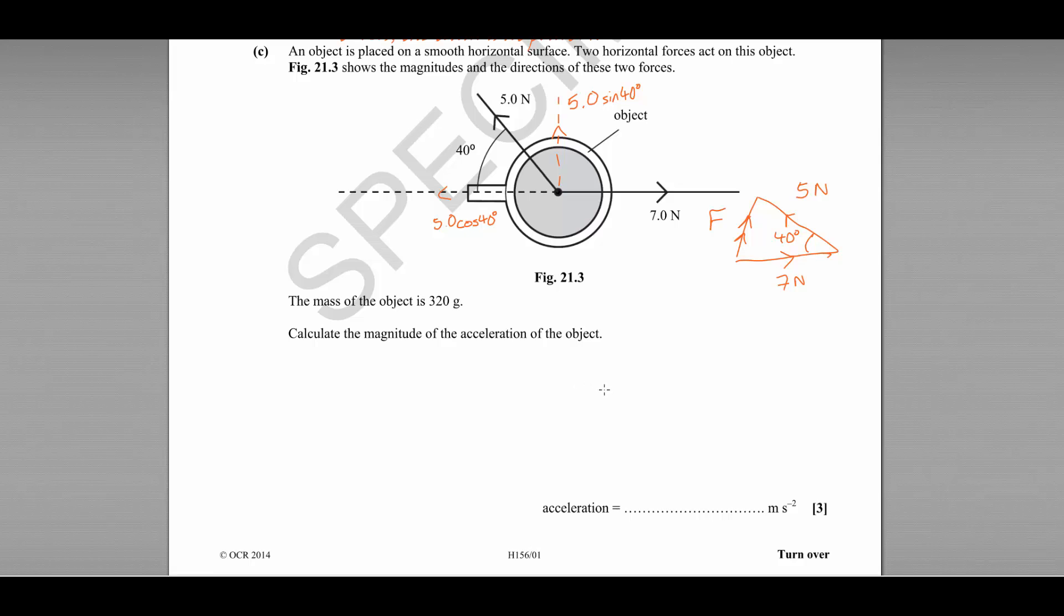So this vector here would be equal to 5.0 sin 40 degrees, and this component here would be equal to 5.0 cos 40 degrees. Now we can resolve the diagram vertically and horizontally to find out our mystery force. So the resultant force in the y direction, the vertical direction, is equal to 5.0 sin 40 degrees because that is the only force acting vertically.